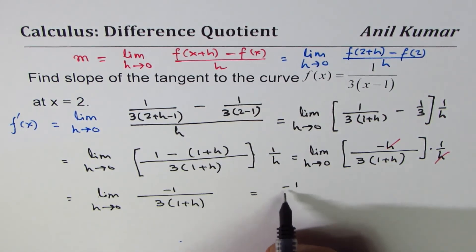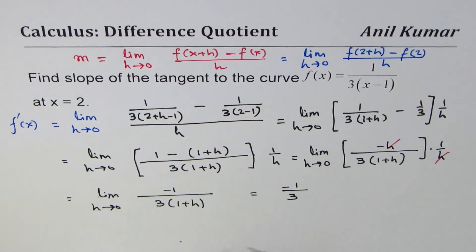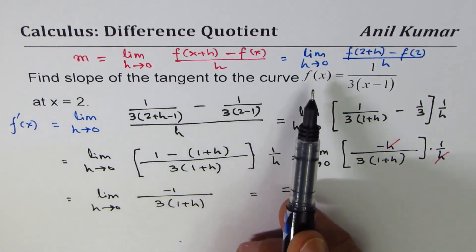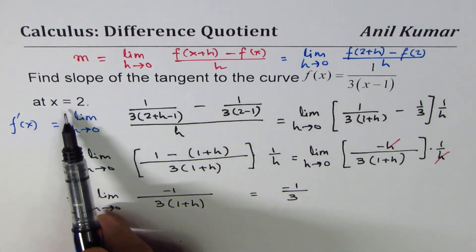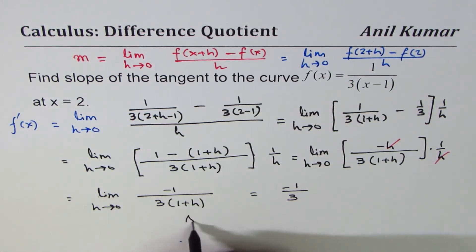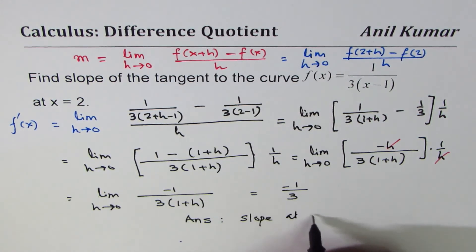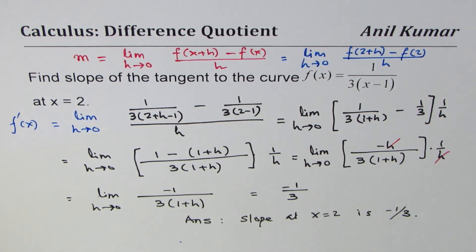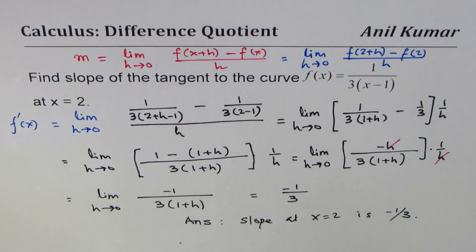So slope of the tangent line for the given curve at x = 2 is -1/3. That's our answer. You could also do general equation and then substitute 2 at the end. However, when the point is given to us, we should use the point itself, it becomes simpler. I'm Anil Kumar and I hope that helps. Thank you and all the best.